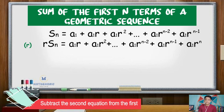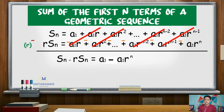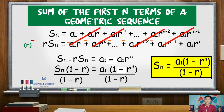Eliminating like terms with different signs, we get s of n minus r times s of n equal to a sub 1 minus a sub 1 times r raised to n. By common monomial factor, we can factor out s of n on the left side of the equation, giving s of n times quantity 1 minus r. On the right side, a sub 1 can be factored out, giving a sub 1 times quantity 1 minus r raised to n. Dividing both sides by 1 minus r, we get s of n equal to a sub 1 times quantity 1 minus r raised to n, all over 1 minus r.